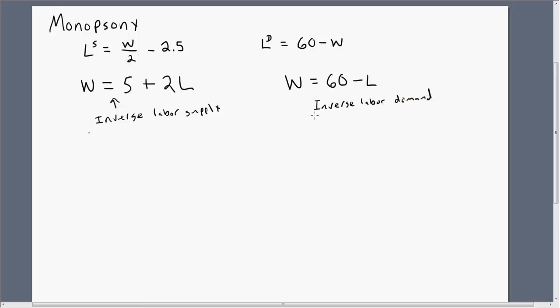This equation, the inverse labor demand, is also the marginal revenue product of labor. As you might recall, the labor demand curve is nothing more than the marginal revenue product of labor, or some books might call it the value of the marginal product, VMP. So that's the demand side.